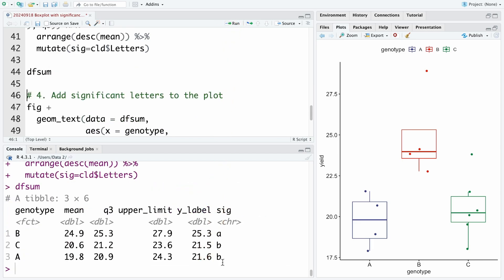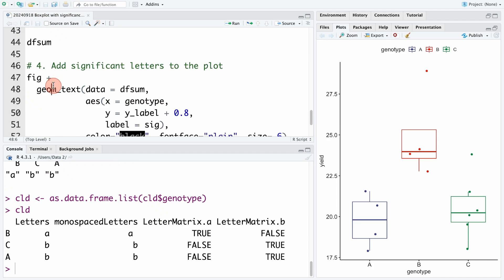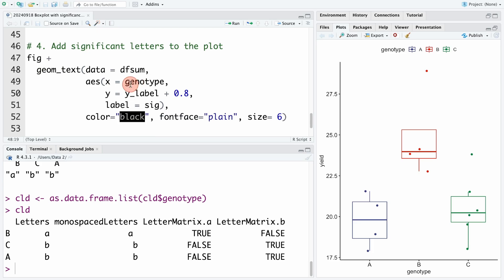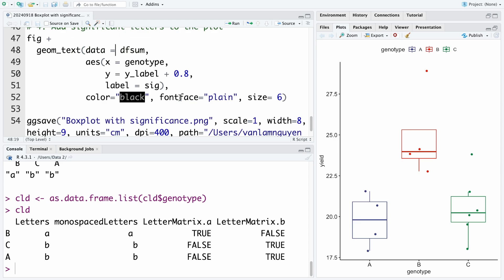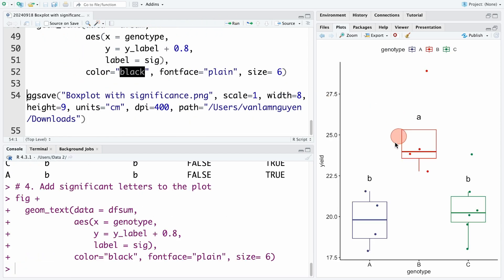Now we add the compact letters to the boxplot we plotted above, which is named fig. We use geom_text, and the data is dfsum that we just created above. X-axis is genotype, Y-axis is the Y label, and we add a value to increase the height of position for the compact letters. This value selected depends on the range of the data. Label is sig. You also can set the font face, font size, and font color for the compact letters. We run the code, and we see the compact letters sit beautifully on the boxes in the boxplot. You can export the plot for the report using ggsave.